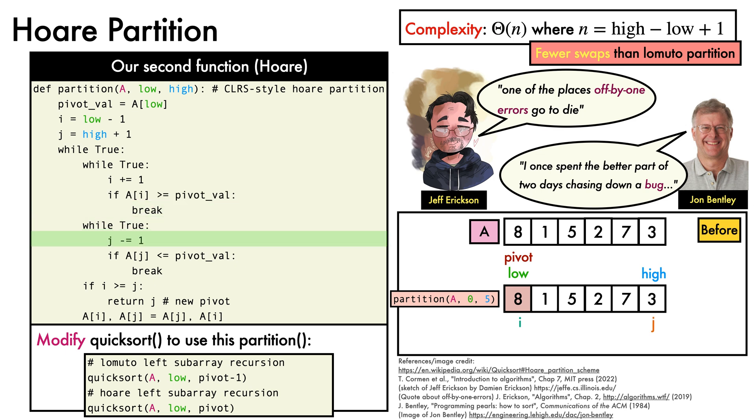From here, we decrement j and check if aj is less than the pivot value, finding it is. We break and check if i is greater than or equal to j. It isn't, so we swap ai and aj, then we start our loop.